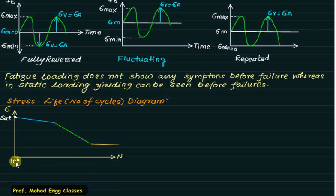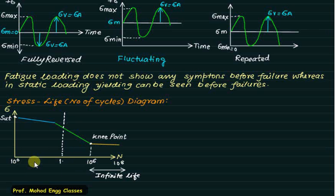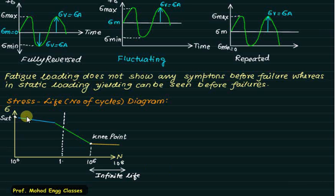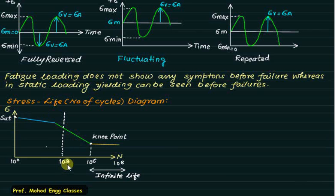On the SN diagram, the curve starts at SUT and the knee point is at 10^6 cycles. The x-axis ranges from 10^1 through 10^3, 10^4, and beyond. The knee point is obtained at 10^6 and the region from 10^6 to 10^8 is considered infinite life. The curve is obtained from a rotating beam loading fatigue test, with sample points joined to form the curve. The region from 1 to 10^3 cycles is called low cycle.